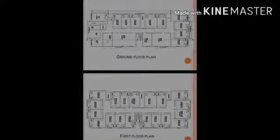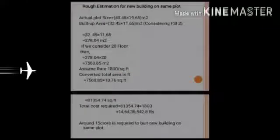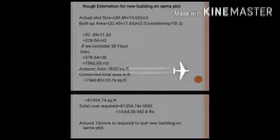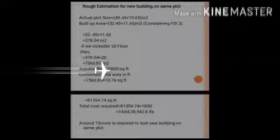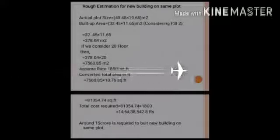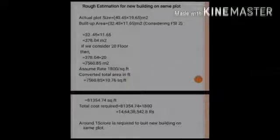We also had the plan of the building, so we calculated the area of the plan. The cost of repair for this building was found to be nearly 1 crore, and by calculating from the plan, the estimated cost of a new building was found to be 15 crores. Thus, financially, repair is the better option than constructing a new structure.